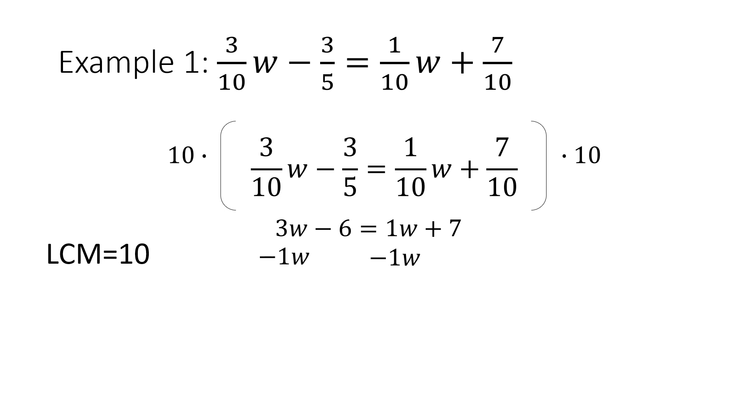My 1W on the right is going to cancel out, and then I simplify 3W - 1W, which gives me 2W - 6 = 7.